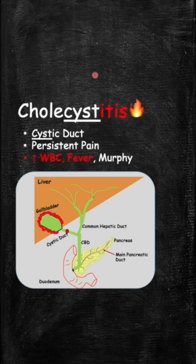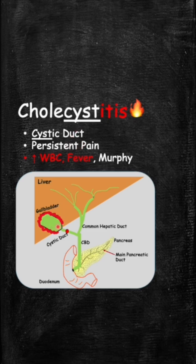The rest of the complications are more serious because the gallstone gets lodged in place and the obstruction doesn't resolve. The first of these is cholecystitis — the gallstone gets stuck in the cystic duct. You can remember cystic duct for cholecystitis, and -itis always means inflammation. The stone in the cystic duct causes persistent pain because bile can't drain, making the gallbladder inflamed. This manifests as a high white blood cell count, fever, and the key exam finding is a positive Murphy sign.